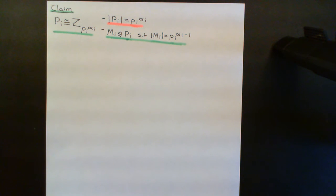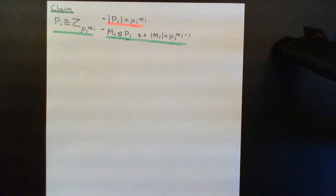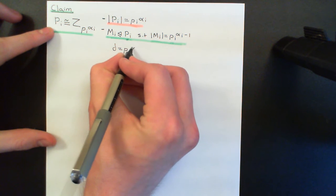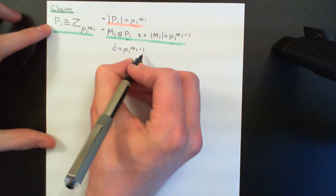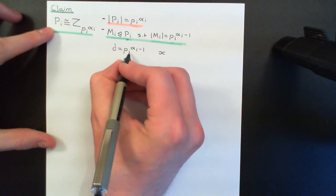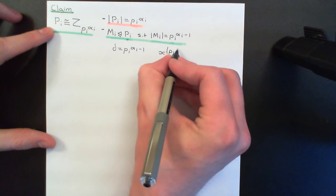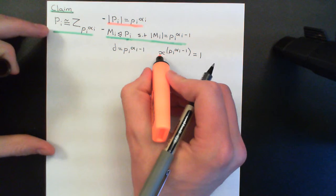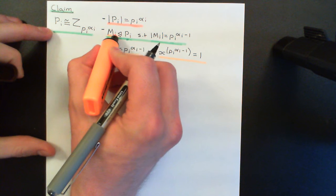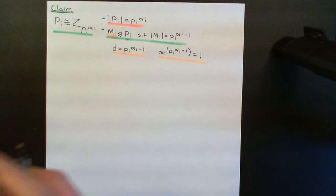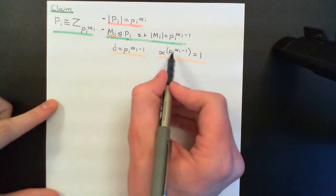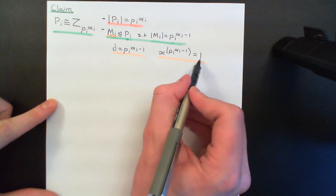Now I'm going to use the strange property: in group G, for any d dividing the order of the group, there is at most d solutions to x^d = 1. I'll use d = p_i^(α_i − 1), which certainly divides the order of the group. I can conclude there are at most p_i^(α_i − 1) solutions to x^(p_i^(α_i − 1)) = 1. All the solutions to that equation are going to be inside M_i, for the same reasons used earlier: all elements of this subgroup of Pi must satisfy this equation, as raising them to the order of the subgroup gives 1.